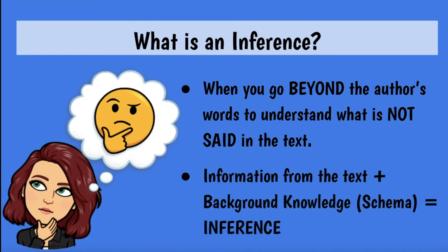We have a little math equation for inference. To make an inference, you take the information from the text and combine it with your background knowledge. Your personal life experiences make up a lot of your background knowledge, as well as things you've already learned in school. You're going to take that background knowledge — also called schema — along with information from the text to make an inference.